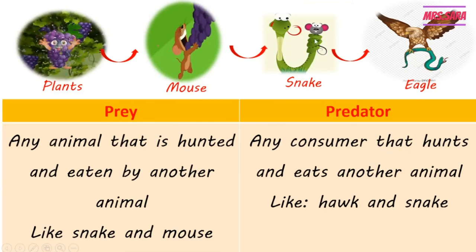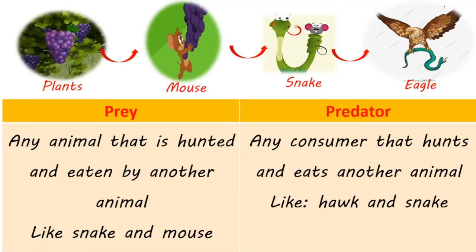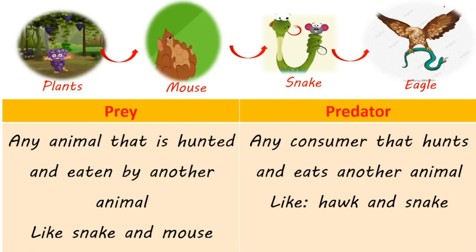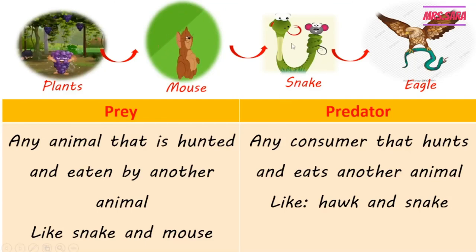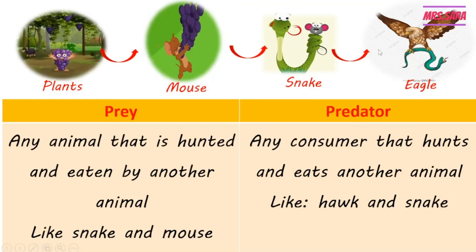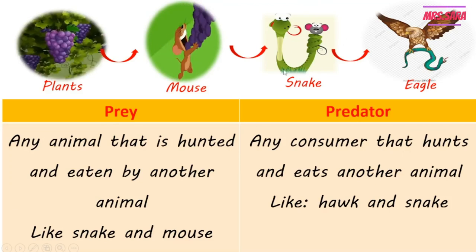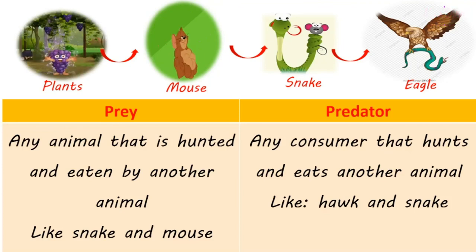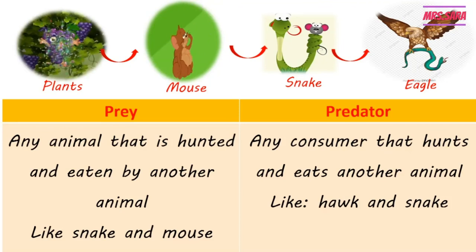A predator is any consumer that hunts and eats another animal, like a hawk or a snake. The snake eats the mouse, so the snake is a predator for the mouse. The eagle or hawk eats the snake, so the eagle is a predator for the snake. So prey is hunted and eaten; predator hunts and eats.